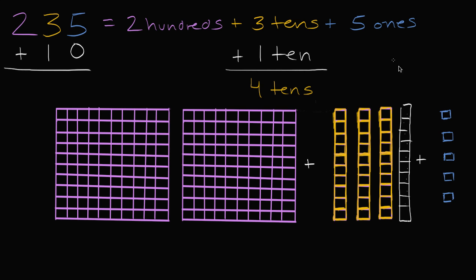I'm still going to have five ones. I'm not adding any ones there. And I'm still going to have two hundreds. I'm not adding any hundreds there. So I'm still going to have two hundreds.